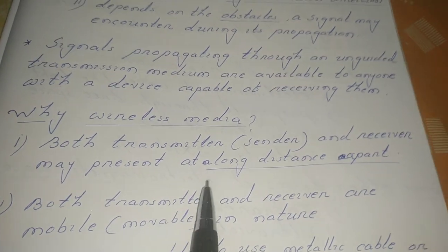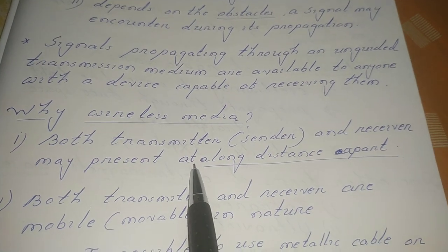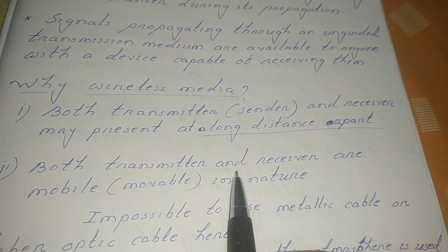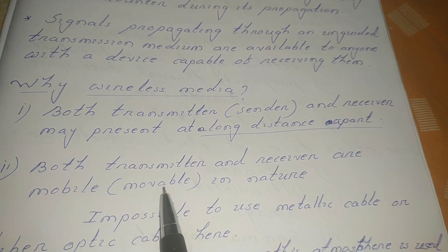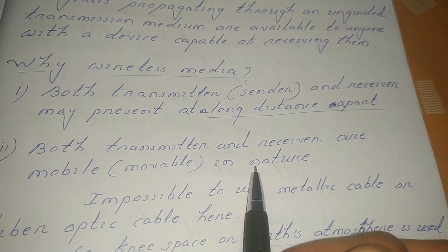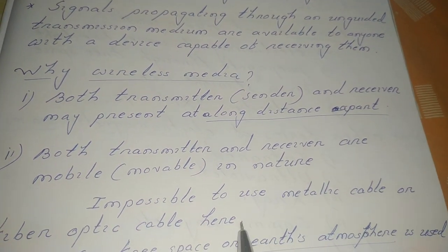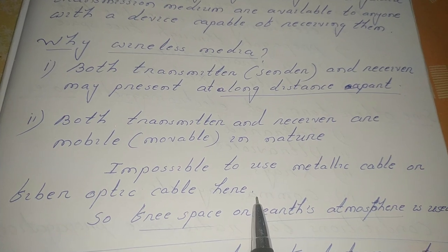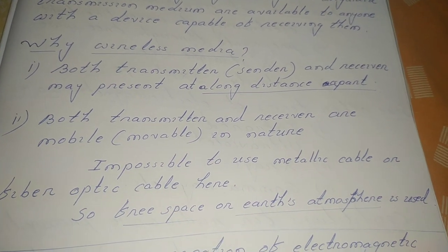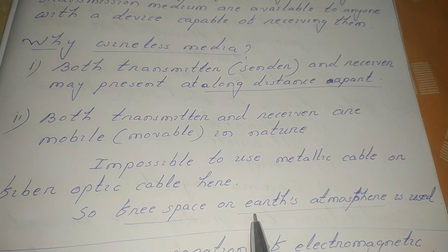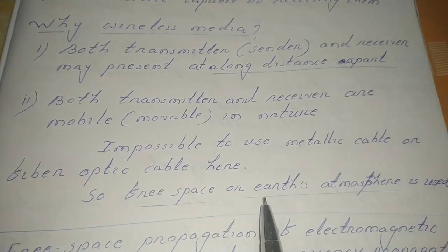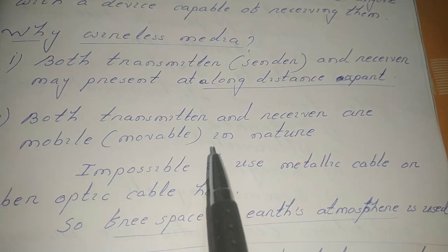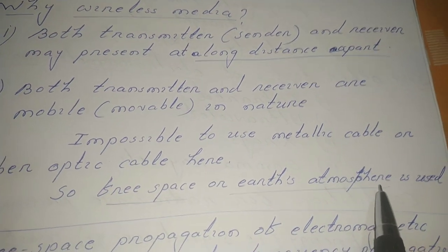Why should we use wireless media? First, if the transmitter and receiver are at a long distance from each other, and second, if the devices are mobile in nature, then metallic cable or optical fiber cable is not practical. For long-distance transmission, a very high-length cable would be required, making it more expensive and practically infeasible. That is why we use some form of wireless media like free space or Earth's atmosphere.